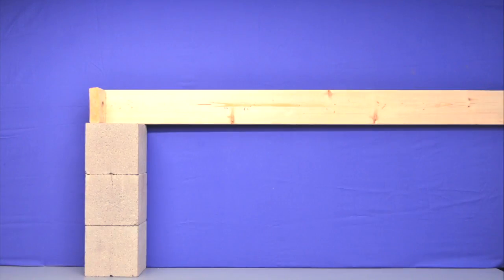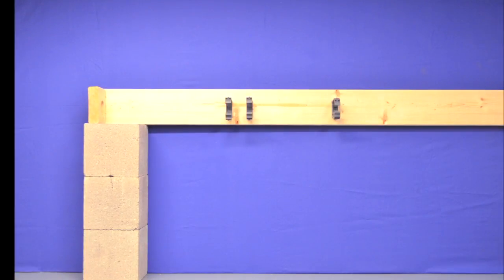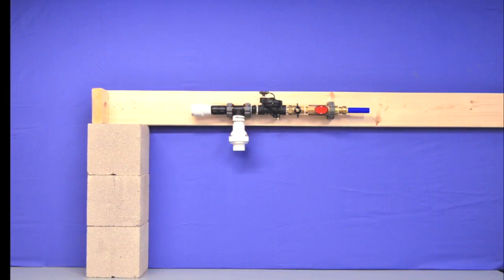Locate a ceiling joist approximately above the sump pit for the mounting of the base pump. Locate and attach the clamps onto the ceiling joist using the hardware included. Attach the base pump onto the clamps and secure tightly.